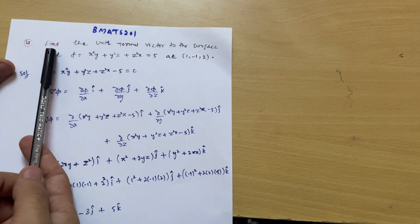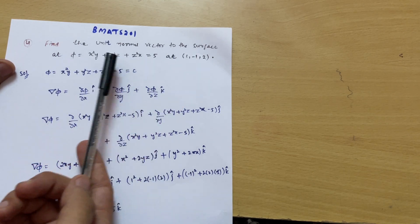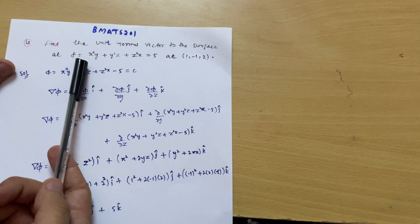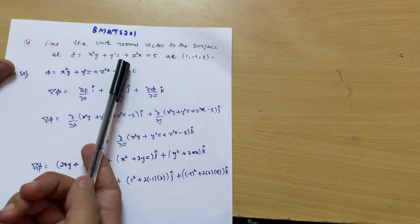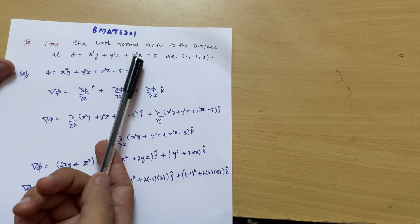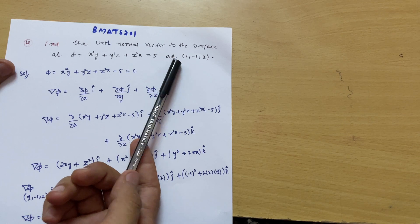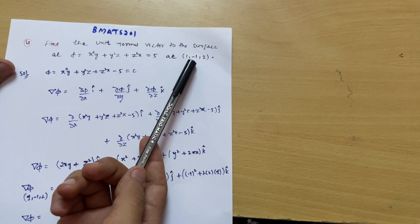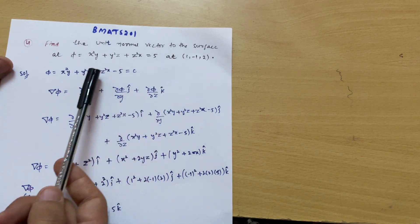This is the question: find the unit normal vector to the surface φ = x²y + y²z + z²x = 5 at the point (1, −1, 2).